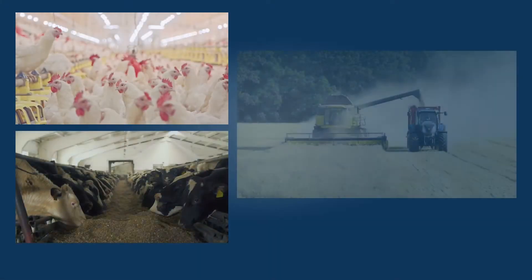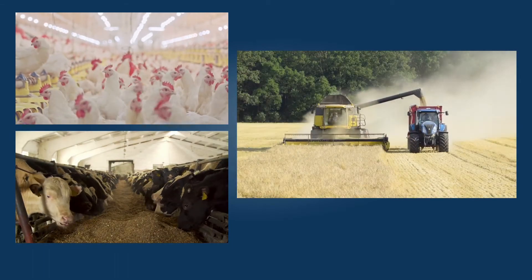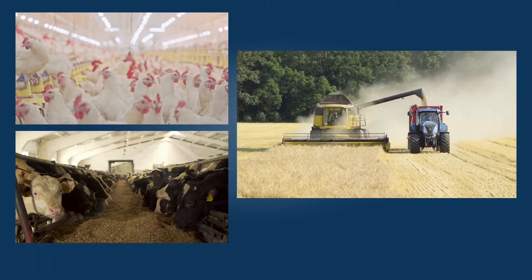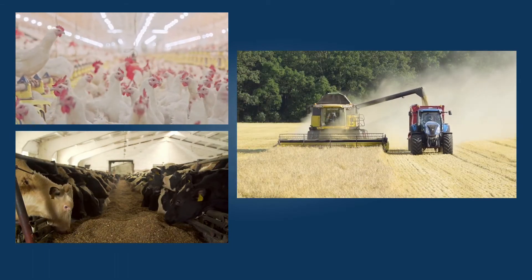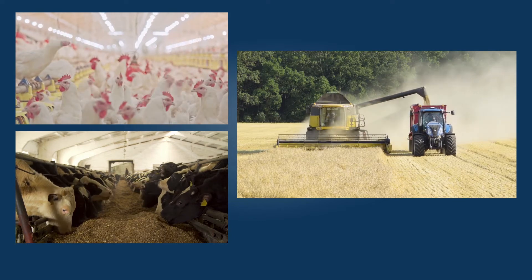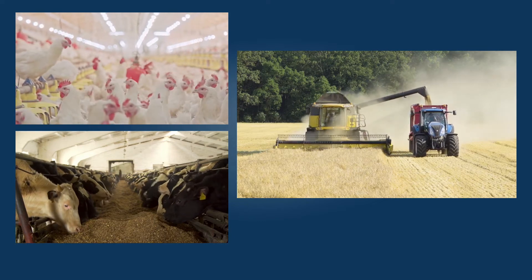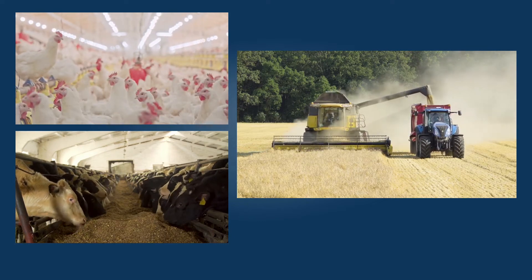Welsh writes that agriculture and food systems generate 31% of the total greenhouse gas emissions from human activities, a 17% increase since 1990.